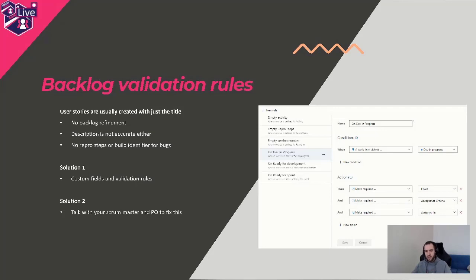Whenever we found technical debt or new features, we were so busy doing actual development that we forgot about writing things correctly in the backlog. The next time you went to do the work you'd planned previously, you never knew what to do because with just a title you didn't have enough context. We were removing bugs or features or user stories without any implementation because we forgot what we needed to achieve.